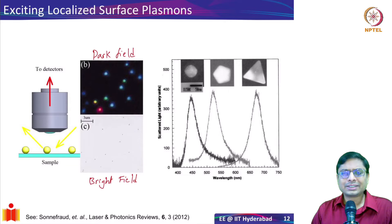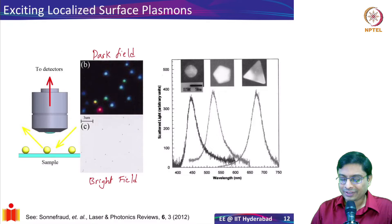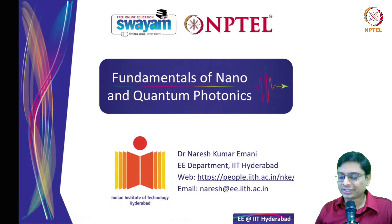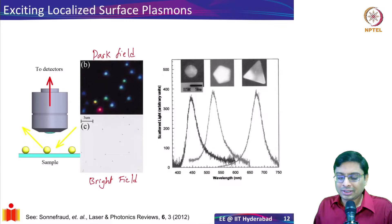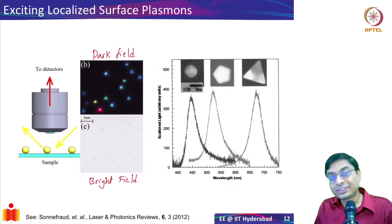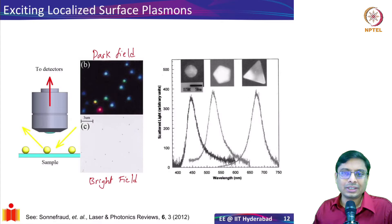You might ask, where is the size dependence coming in? In the quasi-static limit shown in the previous lecture, there is no size dependence — the surface charge or polarization is essentially only dependent on the permittivity. So where is this coming from? It turns out that the quasi-static description is truly valid only when you have a very small nanoparticle. But as the size becomes large, the quasi-static limit breaks down — meaning the electric field is no longer constant over a nanoparticle, it can have a variation and that leads to shifting of resonance.